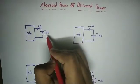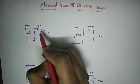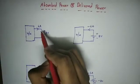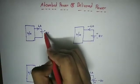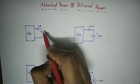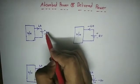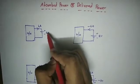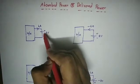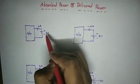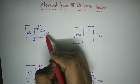Suppose we have a voltage source. In that voltage source, if the current enters the positive terminal, then this voltage source is going to absorb the power.